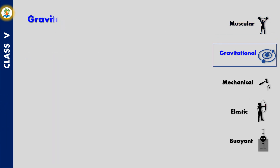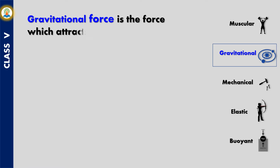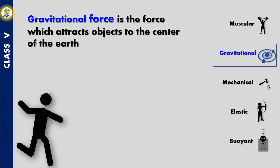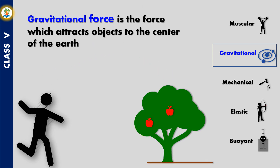Gravitational force is the force which attracts objects to the center of the earth. If we throw a ball in the air, it falls down because of gravity. Fruits and leaves fall to the ground, and we are held to the surface of the earth due to its gravity.